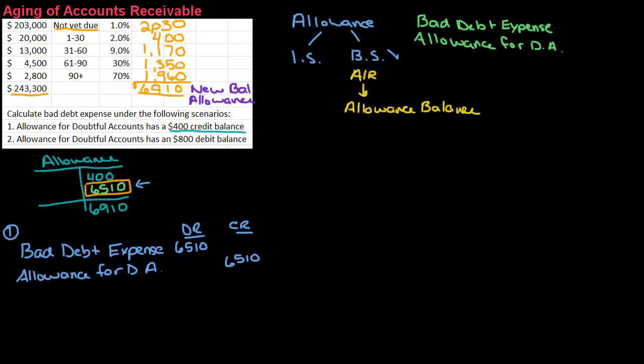Now let's look at scenario number two. So for scenario number two, my allowance for doubtful accounts, let's do this in different color, has an $800 debit balance. So let's do our T account again. I love doing the T accounts for this. It just makes it so much easier to see it. So if you're not doing T accounts, you should really try them out because I think it helps a lot. I have an $800 debit balance, and I still need to end up with a balance of $6,910.